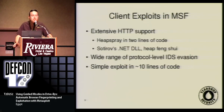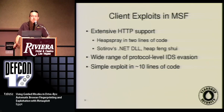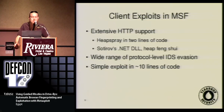Client exploits in Metasploit are relatively easy to write. There's extensive HTTP support — all of that stuff is already there. There's heap spray in two lines of code; that's a fairly complex technique and you can do it in two lines of code in Metasploit. There's also support for more complicated stuff — Sadorov's .NET DLL and heap feng shui are both integrated. It's a lot easier than having to write it yourself and producing some big ugly HTML file. Everything is in Ruby.